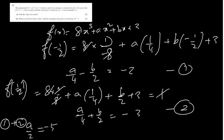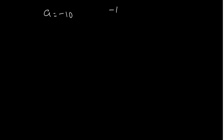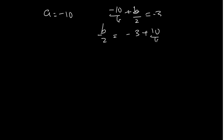So a equals minus 10. Now substitute into equation 2: minus 10 over 4 plus b over 2 equals minus 3. So b over 2 equals minus 3 plus 10 over 4, giving minus 2 over 4, so b over 2 equals minus one-half, and b equals minus 1. So a equals minus 10, b equals minus 1.